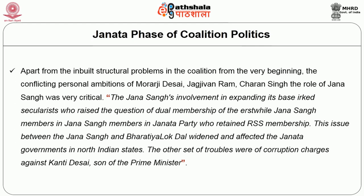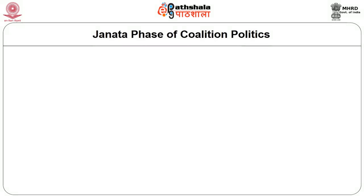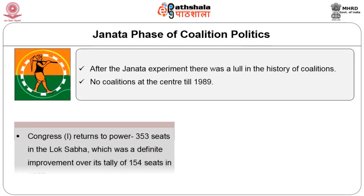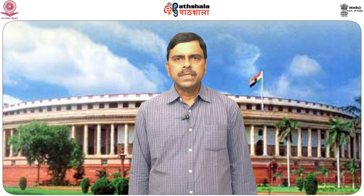During this period India witnessed a situation where relatively stable multi-party systems at the regional level found themselves within an unstable multi-party system at the national level. Within two years the Janata Party collapsed — partly due to the fight over Jana Sangh members retaining membership of the Rashtriya Swayamsevak Sangh — and the 1980 election brought back one-party government. When Congress returned to power, Janata Party state governments were dismissed and fresh elections returned Congress in most states.